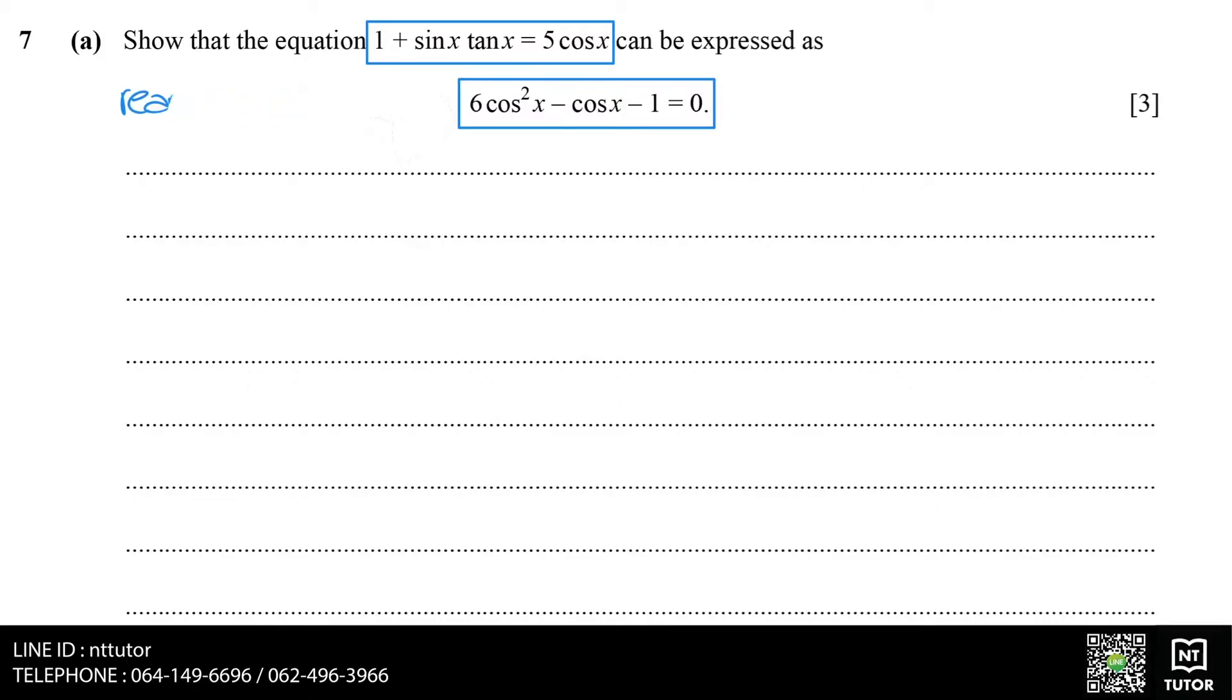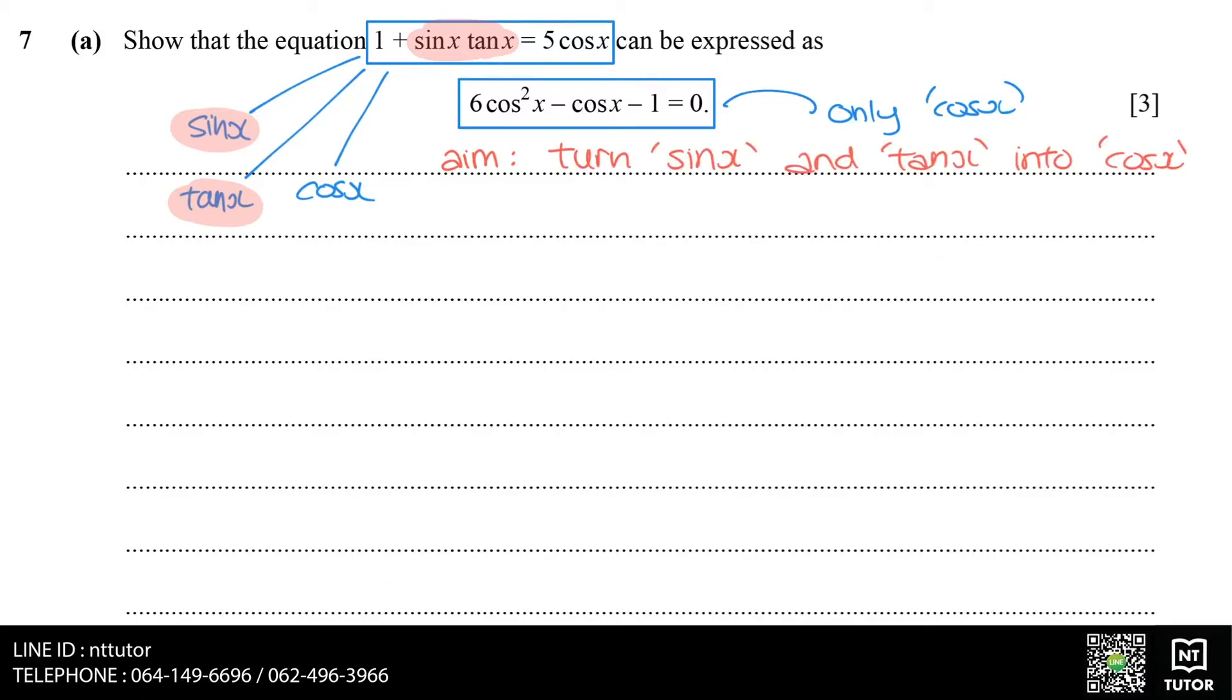If we compare the two expressions, the first expression has a sine x, a tan x, and a cos x, whereas the second expression that we want to turn it into only has a cos x. So our aim should be trying to turn the sine x and tan x into some form of cos x.